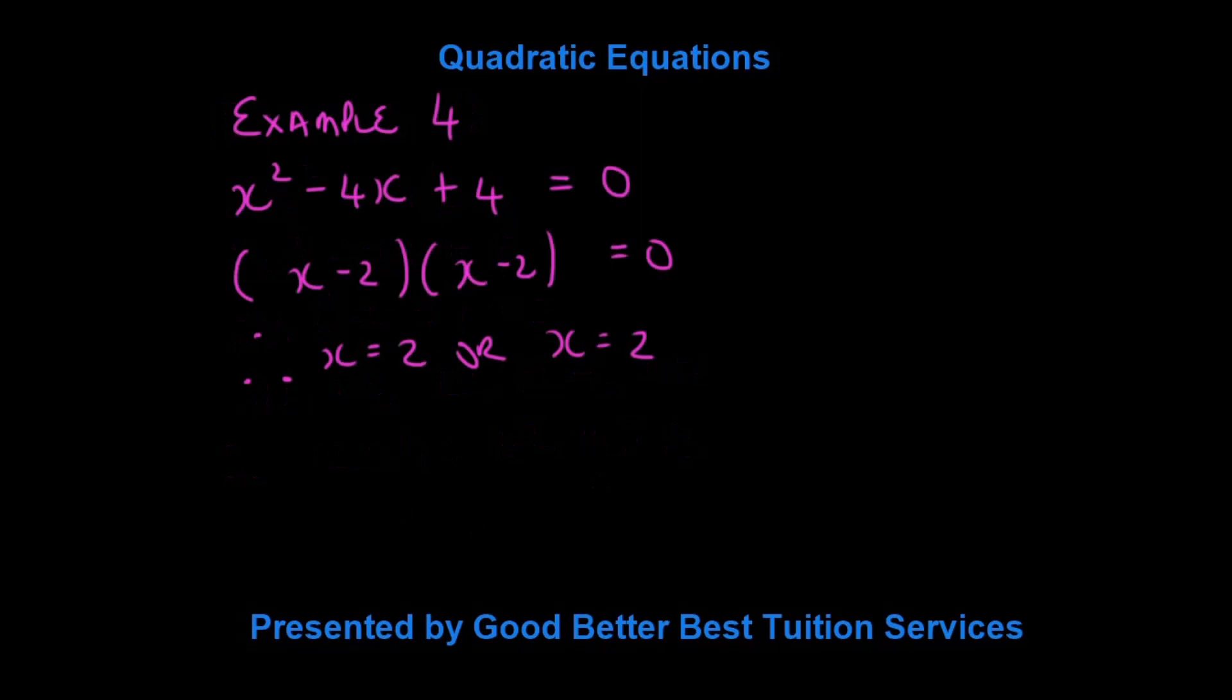Let's look at example 4. Now, example 4 is one of those exceptions. Remember, I said we always need two solutions for quadratic equations. But if you look at this expression, you'll see that it's a trinomial, and when we factorize it,